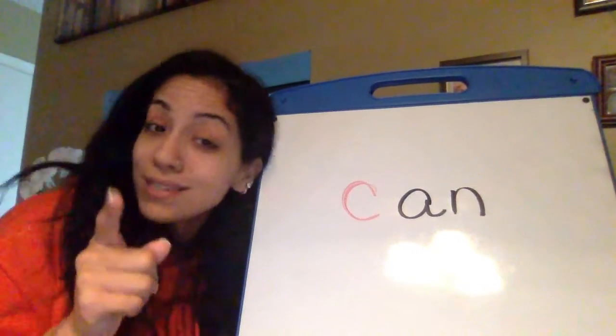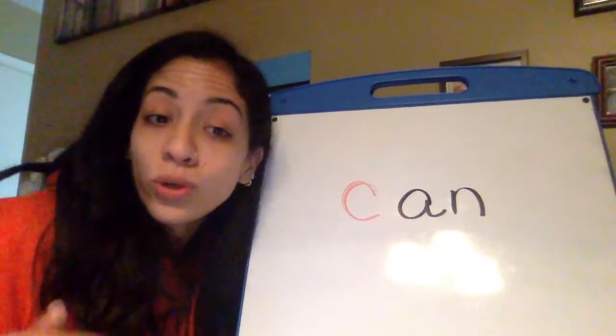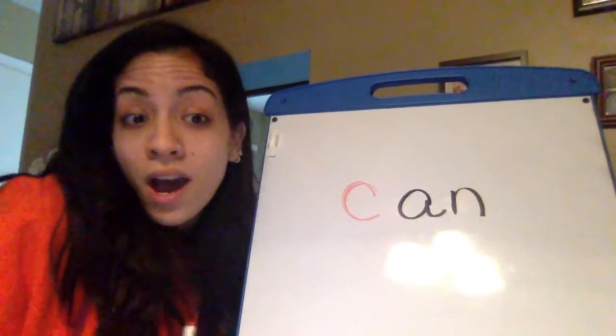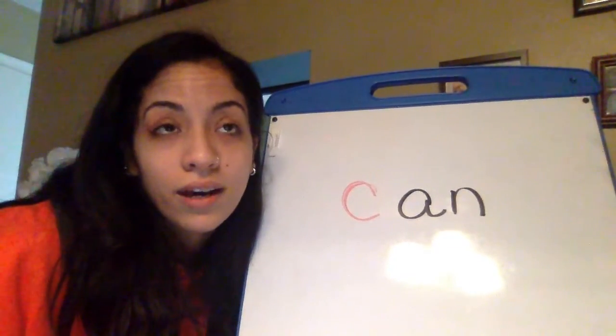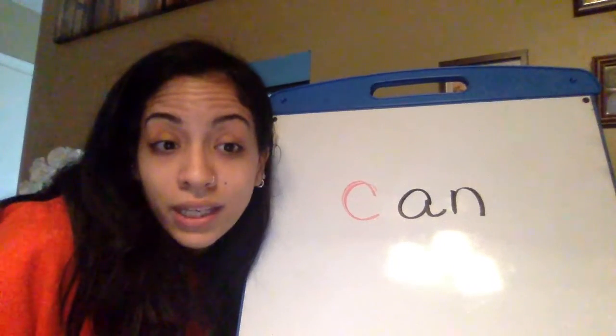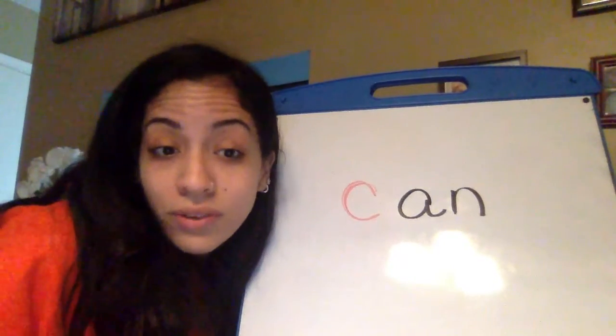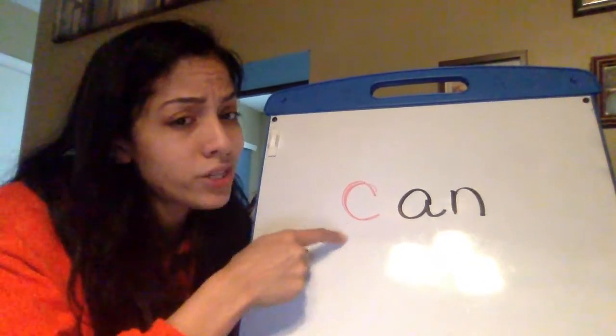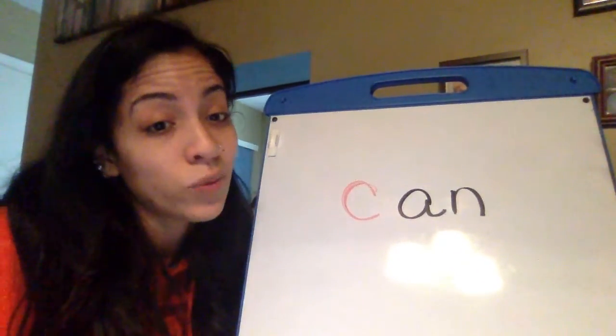So I want you to keep practicing that at home. Okay. And you can use any word family, like the at family, the and family, the og family, the et family, the un family. We learned all about all of those families. But I want you to think about if you change that beginning, how could you make a new word?